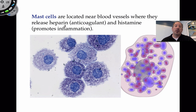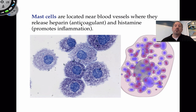Mast cells also secrete a chemical called heparin, which is an anticoagulant — it prevents blood from clotting. You want blood to clot sometimes when there's a cut, but not most of the time. Maintaining that balance is very important. Surgeons also use heparin during surgery so that the blood isn't clotting during the procedure.